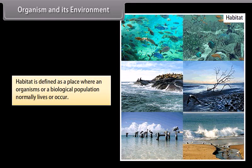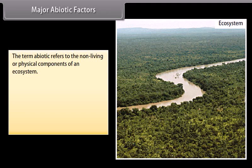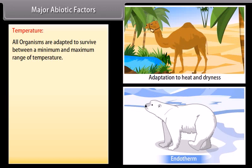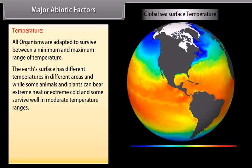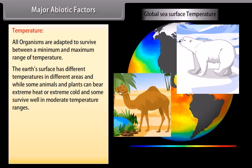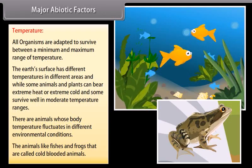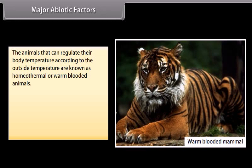Major abiotic factors: the term abiotic refers to the non-living or physical components of an ecosystem. These are temperature, water, light, and soil. All organisms are adapted to survive between a minimum and maximum range of temperature. Some animals and plants can bear extreme heat or extreme cold, while some survive in moderate temperature ranges. Animals whose body temperature fluctuates with environmental conditions, like fishes and frogs, are cold-blooded. Animals that can regulate their body temperature according to outside temperature are known as homeothermal or warm-blooded animals.